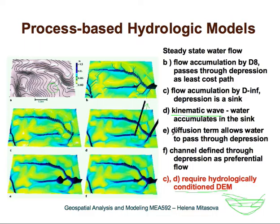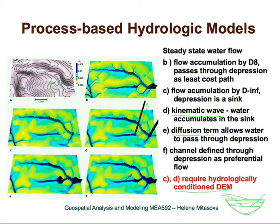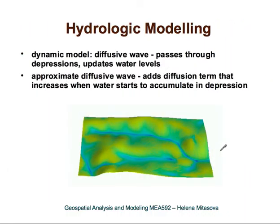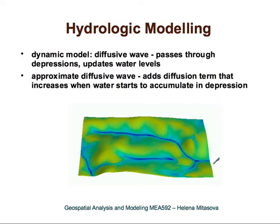If we add a diffusion term to kinematic wave, we can get water through the depression in a more realistic way — water fills the depression and when it hits a certain water level, it starts to disperse and exits the depression. Another way hydrologic models deal with depressions is that a channel is defined through the depression and water is routed through that channel. With the diffusive wave dynamic representation, you can watch the depression fill with water and, once filled, spill over and continue to flow — a more realistic handling.